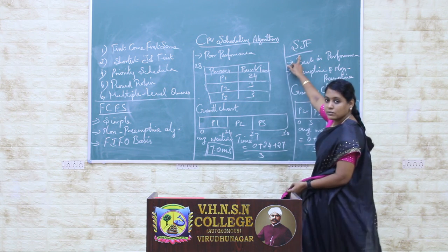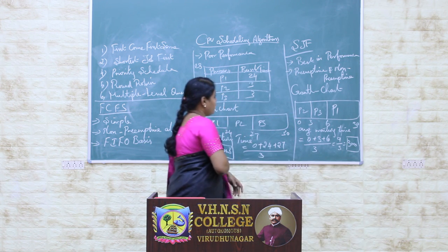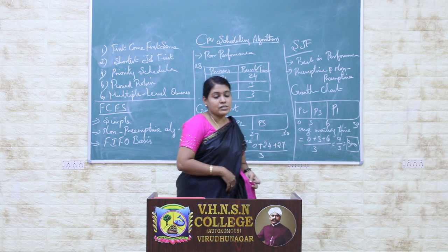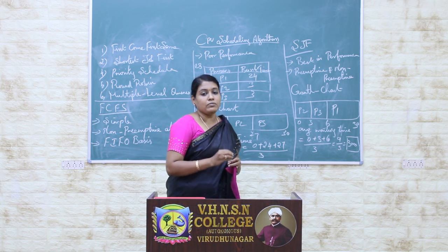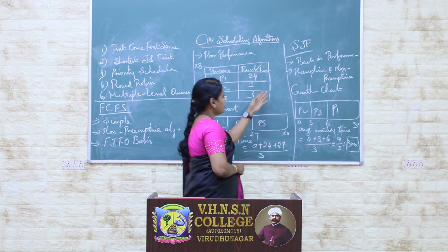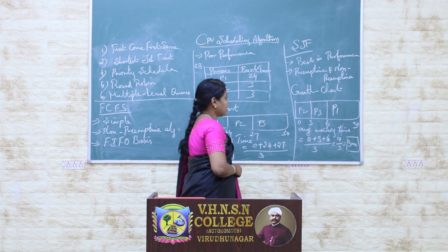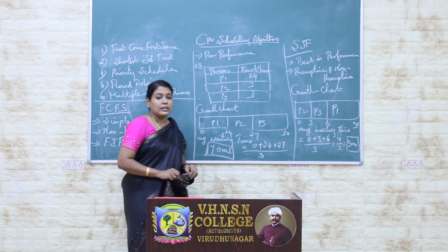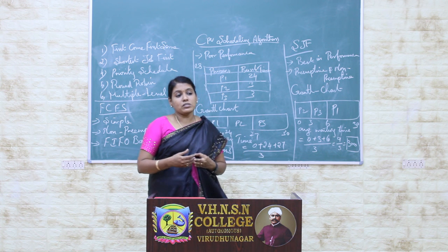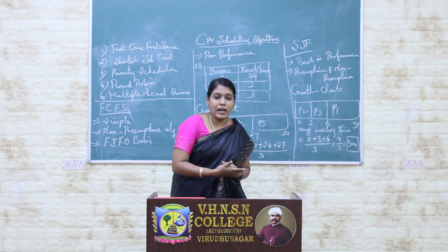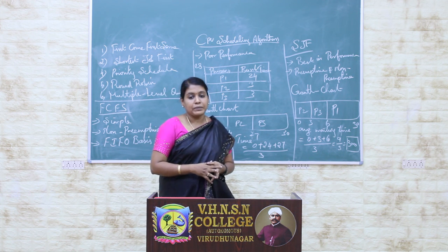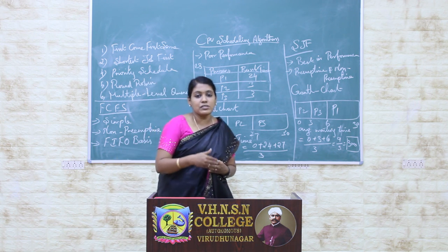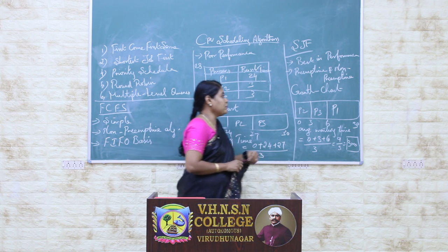Next we look at the Shortest Job First CPU scheduling algorithm. As its name indicates, whichever process has the least CPU burst time will be served by the CPU first. This is the best CPU scheduling algorithm in terms of performance. This algorithm uses both preemptive and non-preemptive scheduling. Preemptive means the running process can be interrupted by a higher priority process. Non-preemptive means any new process must wait until the running process finishes execution.